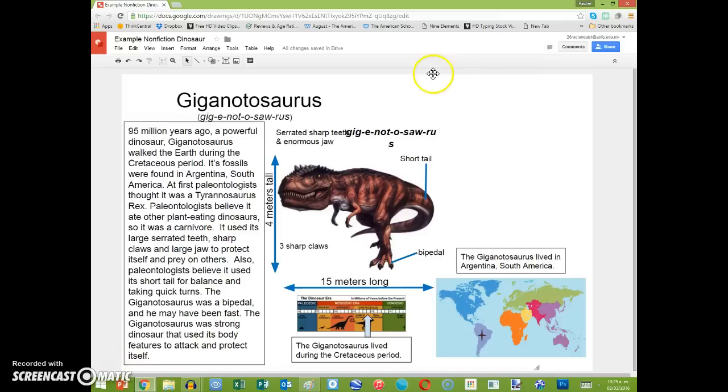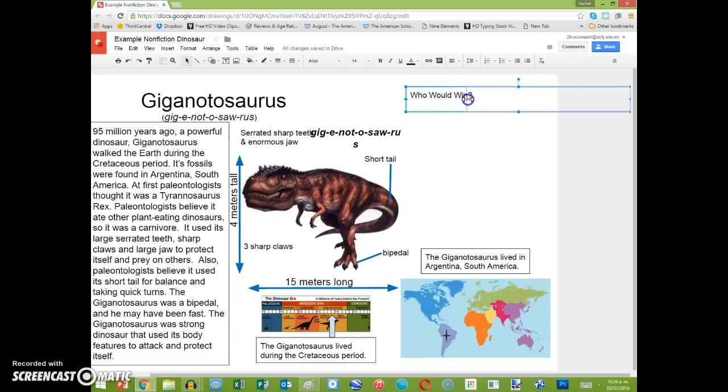To do a Who Would Win, first we need to add a text box and write that title. So I'm going to say, Who Would Win? Question mark. Remember that this is a title of a text feature, so the first letter needs to be in capital letters.